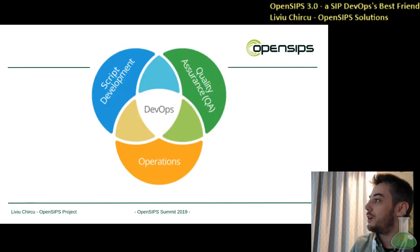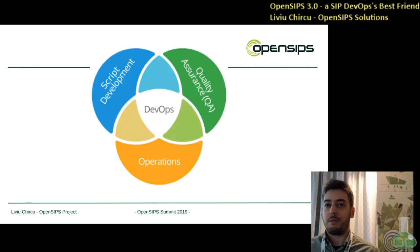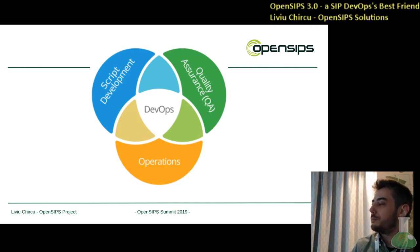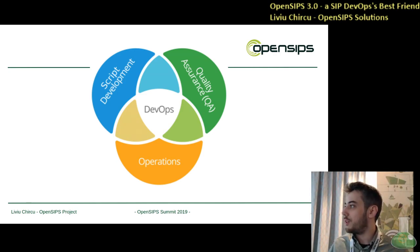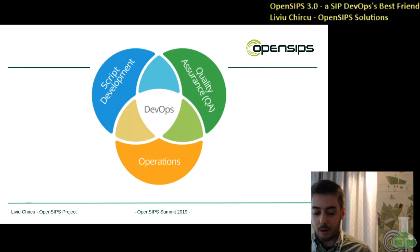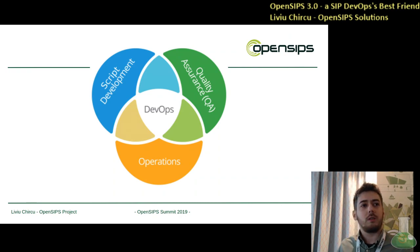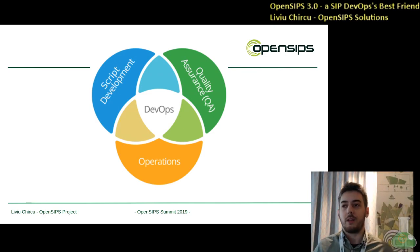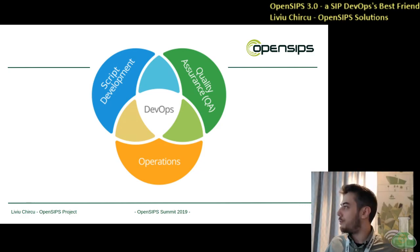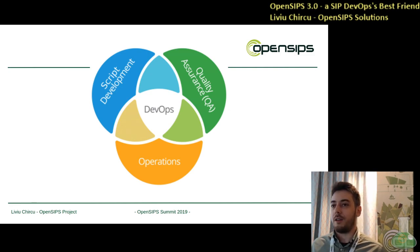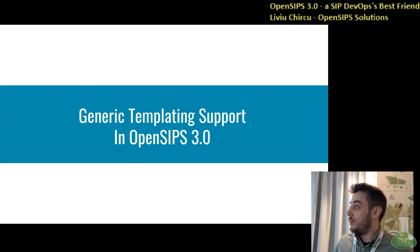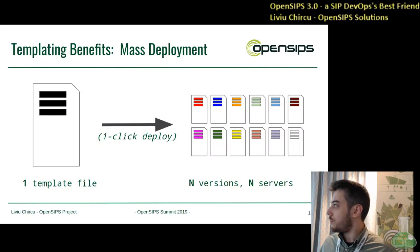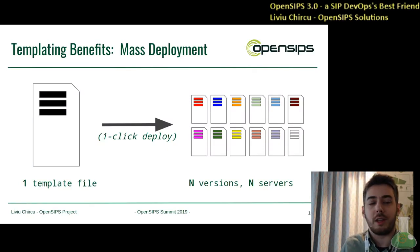In OpenSIPS we've taken care of some aspects of DevOps and built these ideas into 3.0. The first one I'm going to cover is script development, where we noticed a strong increase in the need for templating the config files, for deploying in massive multi-node infrastructures as fast as possible and as often as possible. This is to give you some ideas of what templating can do for you.